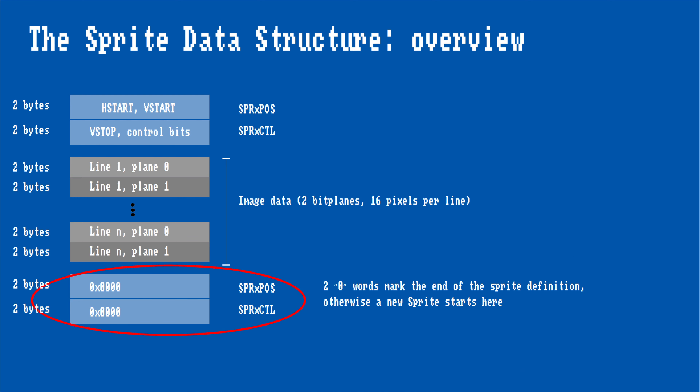The image data is followed by two words, which will either describe an additional multiplex sprite or are set to zero if there is no more data. Because once enabled, the sprite DMA will look for these two control words, we will have to point the unused sprite channels to an address containing two zero words to avoid unexpected effects.